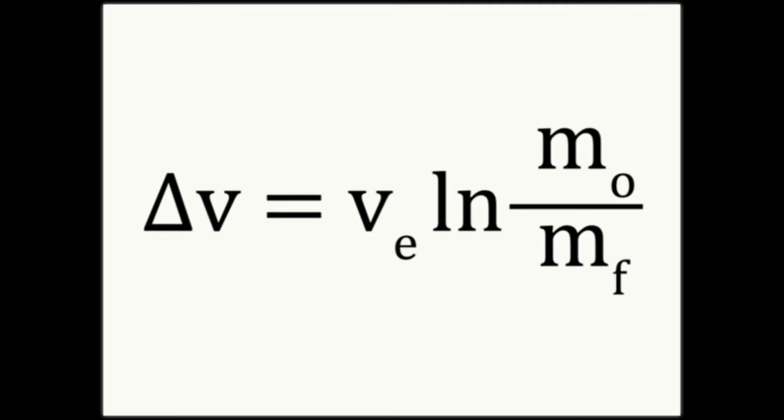Delta V means how much a rocket can change its velocity over the course of its entire flight. Now, this is an extremely important concept of rocketry, because if we know that the orbital velocity of Earth is 7.2 kilometers a second, and your rocket has 7.2 kilometers a second of delta V, that means that rocket can reach Earth's orbit. A couple more things to note are that the values for delta V and the values for VE don't change over the course of the flight. They are constants.